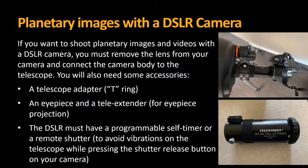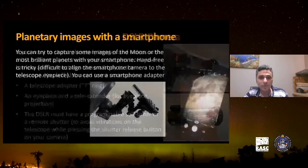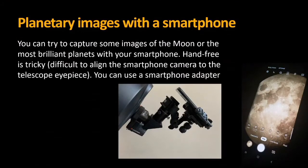There are different ways to capture images. I used to use a DSLR camera with a telescope adapter — you'll need a T-ring for Canon or Nikon and a tele extender for eyepiece projection. Importantly, your DSLR must have a programmable self-timer or remote shutter; otherwise the vibration from pressing the shutter button will ruin your image. You can also use a smartphone to capture the moon or bright planets using a smartphone adapter — I use the Celestron universal smartphone adapter, which works very well on the moon.